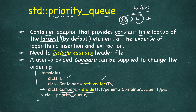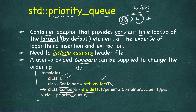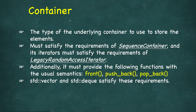We will see an example where we provide our own custom comparator and change how priority is set. This becomes mandatory when the element type is a user-defined class, where less-than or greater-than operators won't work, so you need to define a custom comparator. But even for primitive types you can define your own comparator.